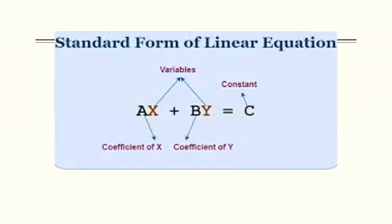In this slide, you can see the standard form of a linear equation. In such an equation, there are variables x and y, both having the power 1. This is called the linear equation. These variables are along with coefficients a and b, so ax plus by is equal to c. Here, c is the constant — the term without a variable.